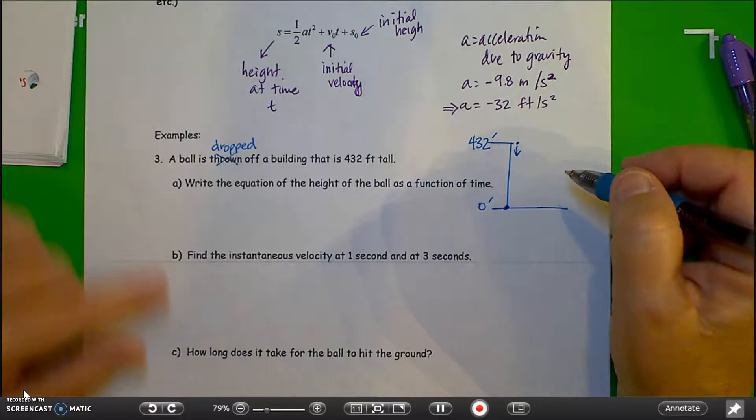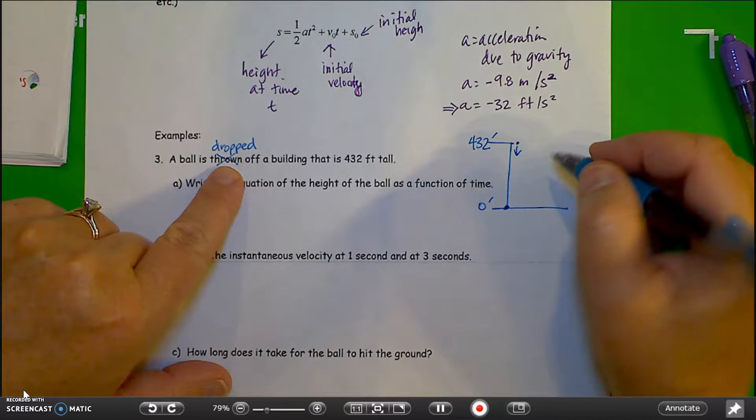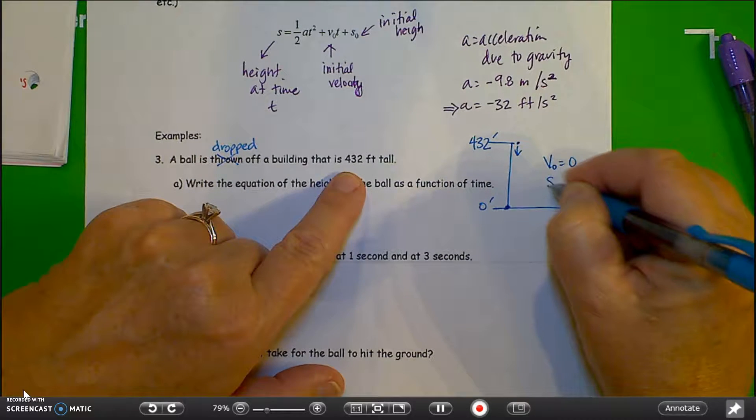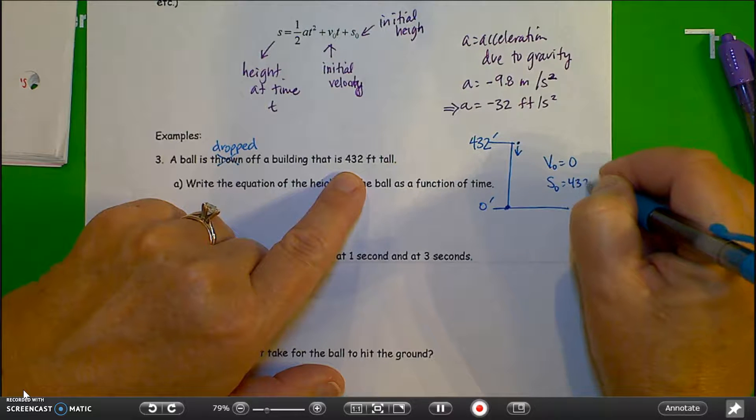And from the problem, since it's dropped off the building, the initial velocity is zero. The initial height is 432 feet.